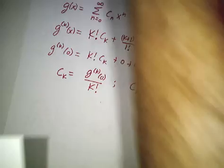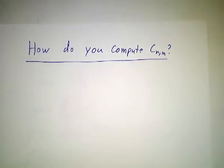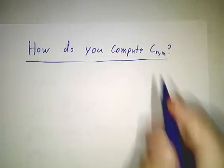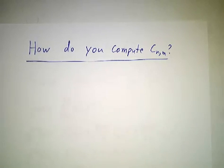So the big question is how do you figure out those coefficients? c_nm is the coefficient of x to the n, y to the m, and how do you figure it out?